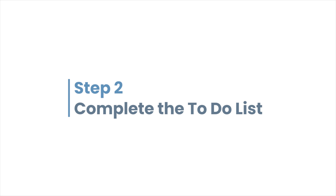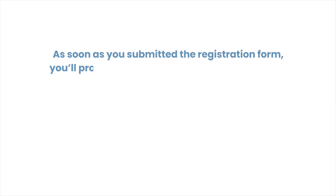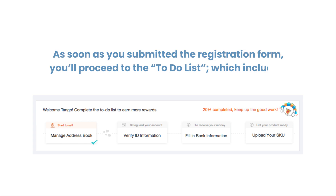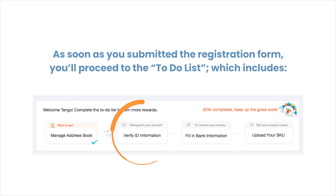Step 2: Complete the to-do list. As soon as you submit the registration form, you will proceed to the to-do list, which includes the address book, ID information, and bank information.